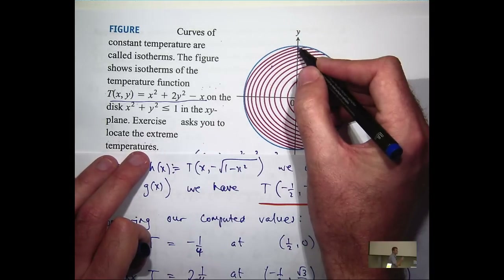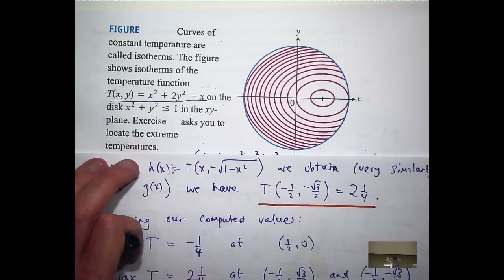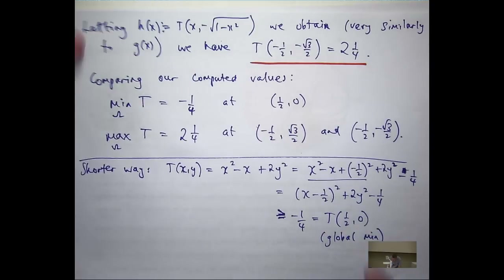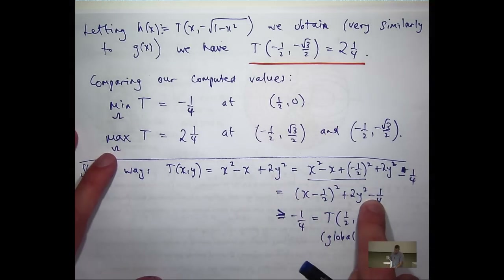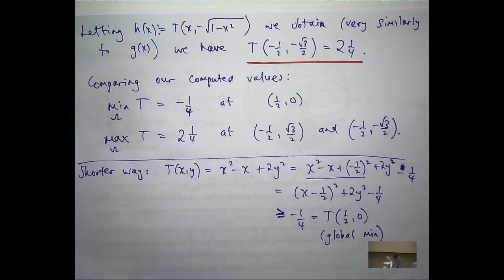The temperatures of the two symmetric points about the x axis must be the same. This temperature function is a kind of paraboloid — all it is, is the paraboloid x squared plus 2y squared minus one quarter, moved half a unit along the x axis. So you would expect it to have a global minimum, and you know that it's sort of rising in all directions. So you would expect the maximum to happen on that boundary circle.